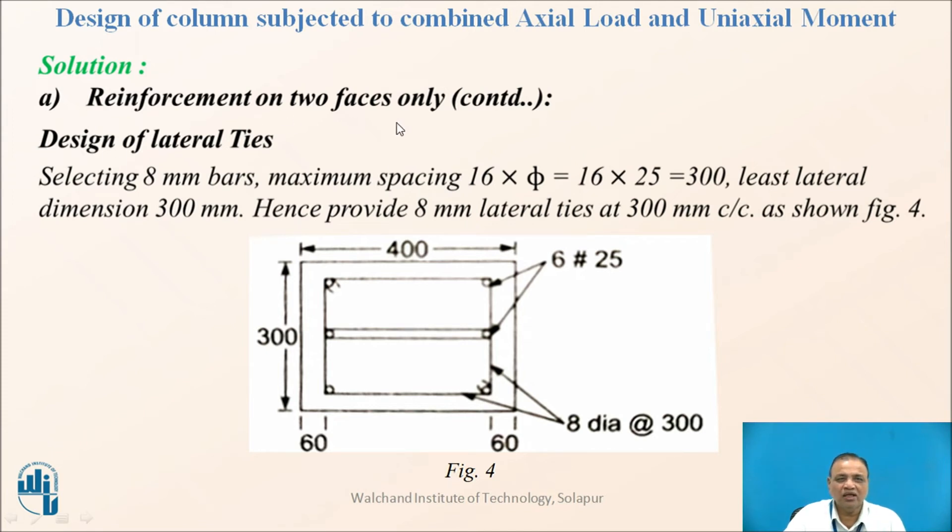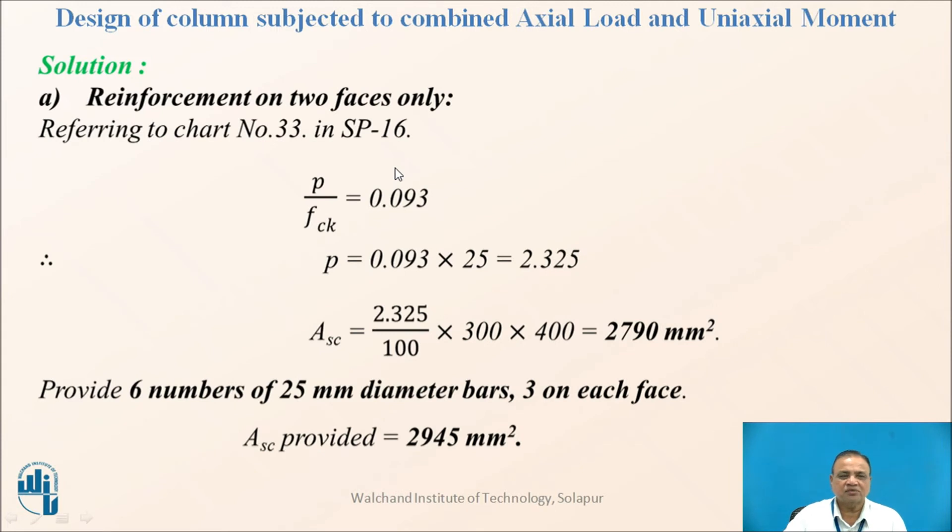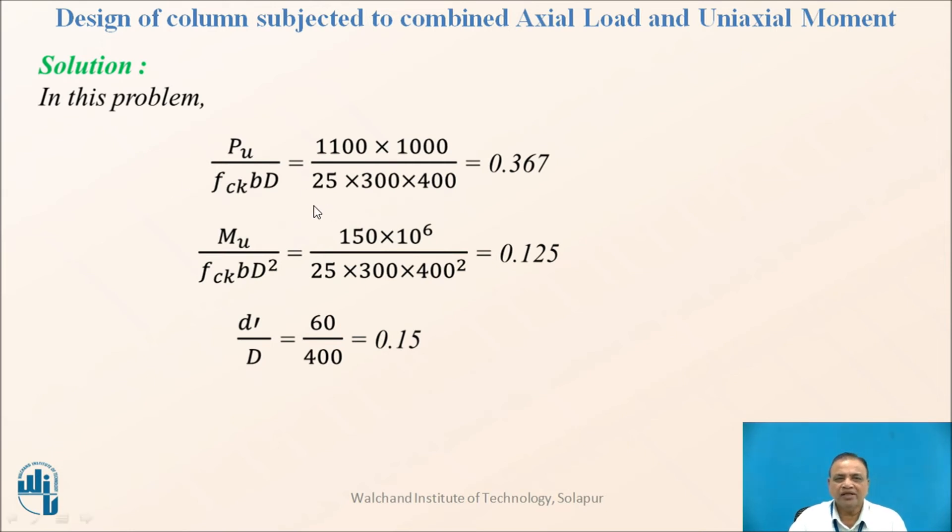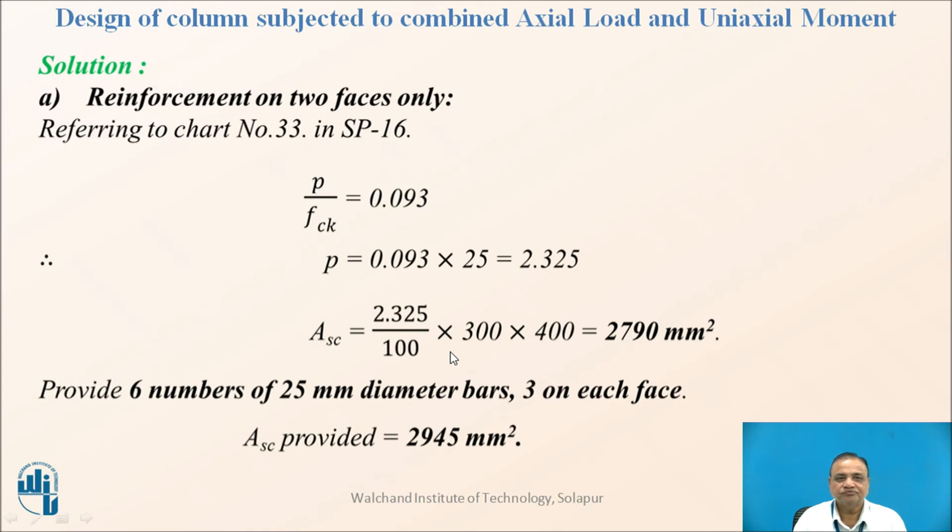We are supposed to find out from SP16 what is the P by FCK. P upon FCK BD we have calculated from the given values that works out to be 0.367. MU upon FCK BD square is calculated 0.125. D dash by D it is 60 divided by 400, it is 0.15. That is an example taken for explaining how it is. If it is on only two faces then if you refer the chart, it is 33 number chart which will give us in SP16 P by FCK value.